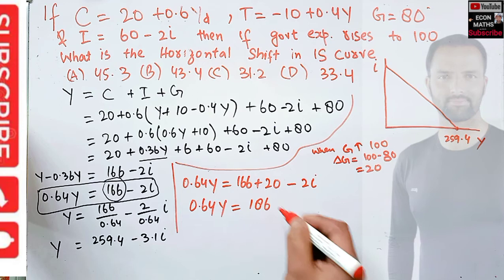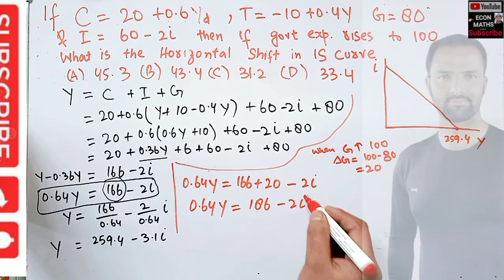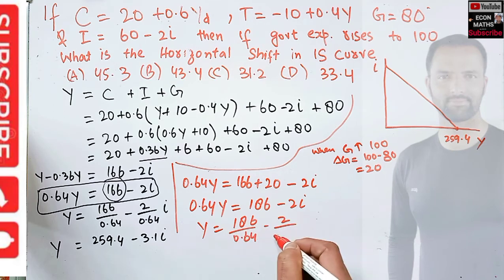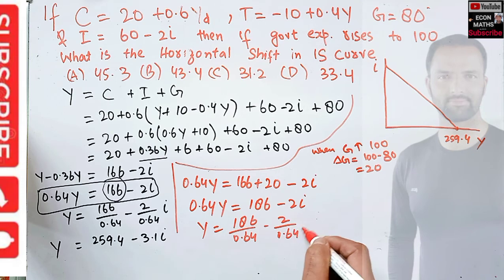If we solve this, 0.64Y = 186 - 2i, so Y = 186/0.64 - 2/0.64 × i.